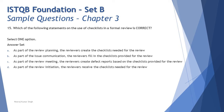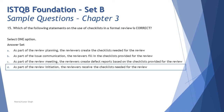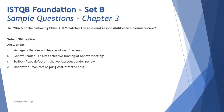Option D says: as part of review initiation, the reviewers receive the checklist needed for the review. This is absolutely correct — it meets the expectation of utilizing the checklist as part of the review. The initiate review phase is the second phase after planning, and at this point the moderator distributes documents to reviewers, one of which will be the checklist if it has been decided to use one. The right answer here is D.